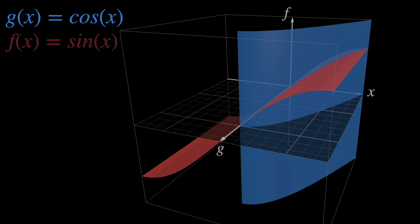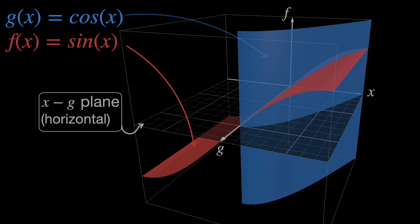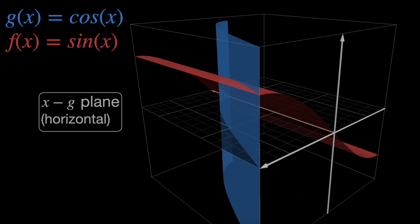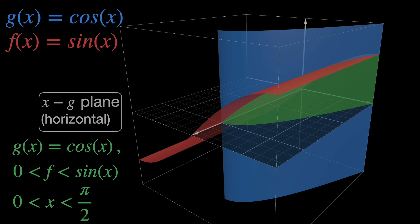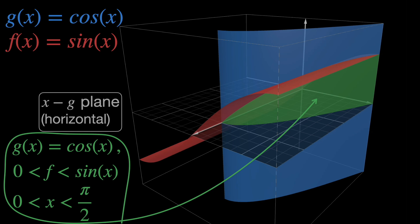Now, the blue curve is g of x and the red one is f of x. The xg plane is the horizontal one, just as before. Our fence will be this green piece of surface, which is just g of x restricted by the intervals [0, sin(x)] for the f-axis, and [0, π/2] for the x-axis.